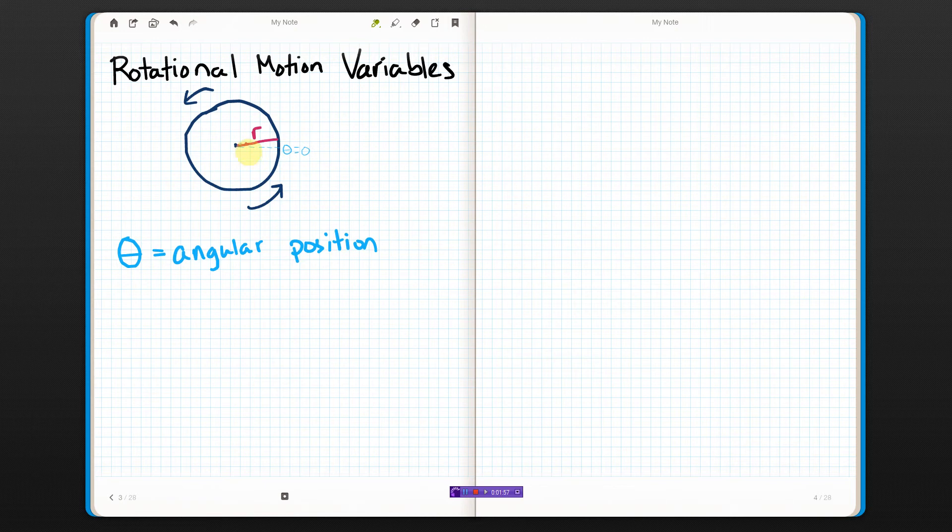It ends up at a different angle. So let's say it was spinning and this point right here ended up over here instead. Then this angle would be theta.